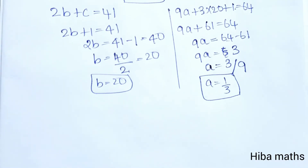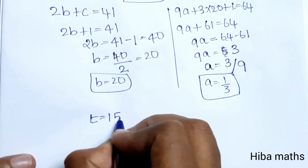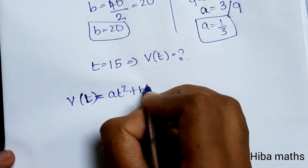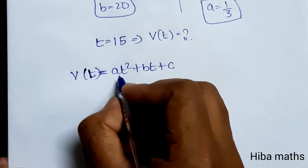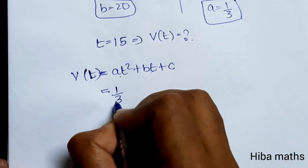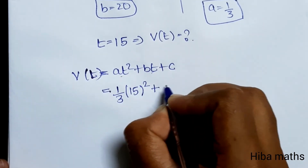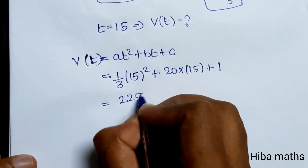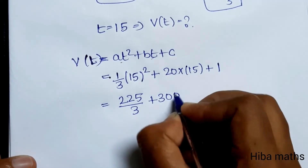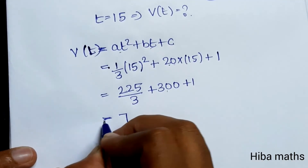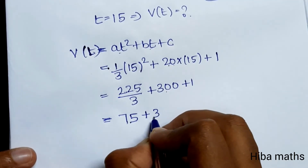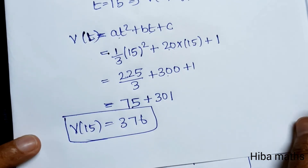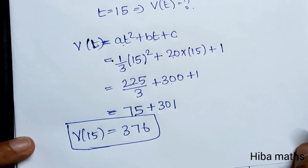Now with a = 1/3, b = 20, c = 1, we find v(15). v(t) = at² + bt + c, substituting t = 15: v(15) = (1/3)(15²) + 20×15 + 1 = (225/3) + 300 + 1 = 75 + 300 + 1 = 376. Therefore v(15) = 376 miles per second. Please subscribe and share the channel. Thank you so much for watching.